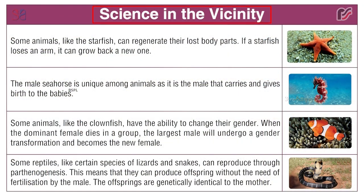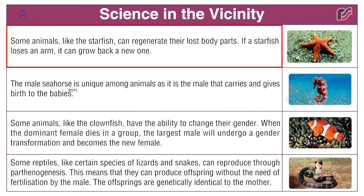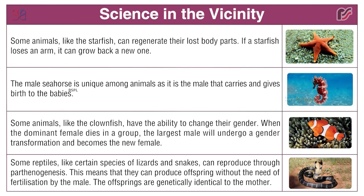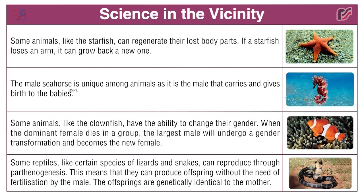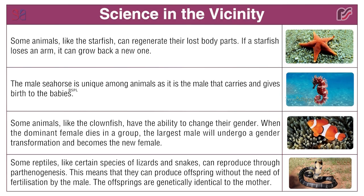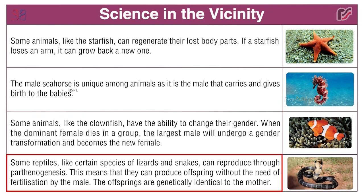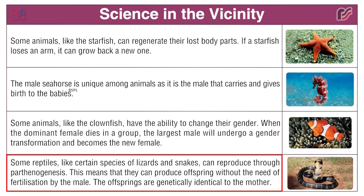Some animals like the starfish can regenerate their lost body parts — if a starfish loses an arm, it can grow back a new one. The male seahorse is unique among animals as it is the male that carries and gives birth to the babies. Some animals like the clownfish have the ability to change their gender: when the dominant female dies in a group, the largest male will undergo a gender transformation and become the new female. Some reptiles, like certain species of lizards and snakes, can reproduce through parthenogenesis — producing offspring without the need for fertilization by the male; the offspring are genetically identical to the mother.